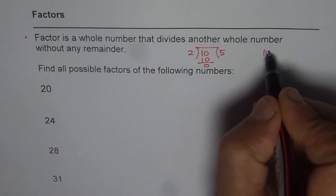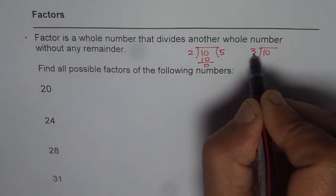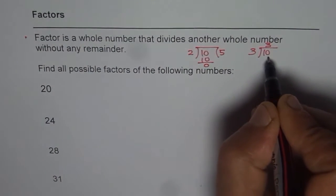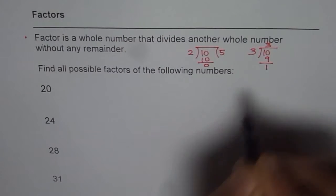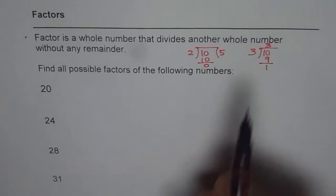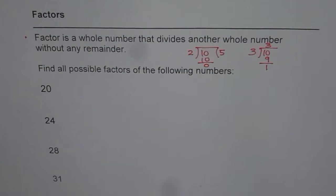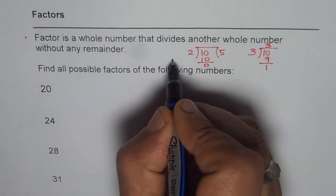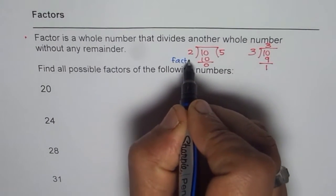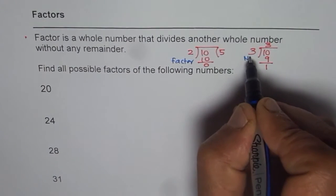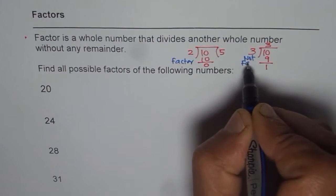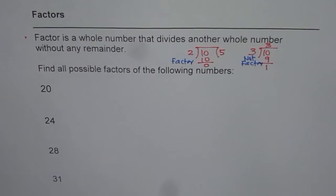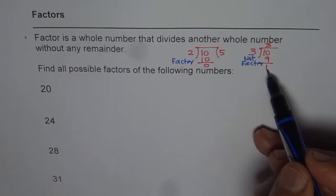But if I divide 10 by 3, then 3 times 3 is 9, I get 1 as a remainder. So 3 is not a factor. So 2 is a factor, but 3 is not a factor of 10, since it divides but leaves a remainder.